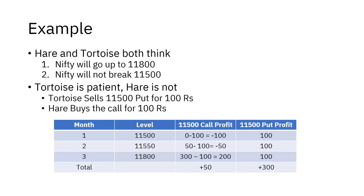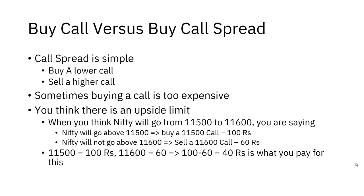The hare and tortoise both believe Nifty will go to 11,800 and won't break 11,500. The hare buys a call; the tortoise sells a put. In month one, Nifty stays flat — the hare loses all his premium, the tortoise makes 100 rupees. In month two, Nifty goes to 11,550 — the hare nets minus 50, the tortoise makes another 100. In month three, Nifty finally goes to 11,800 — the hare makes 200 net, the tortoise makes 100. After three months: hare 150 rupees, tortoise 300 rupees.